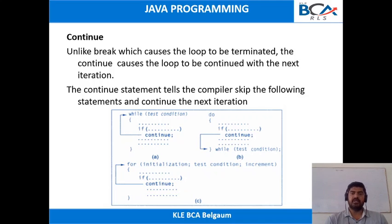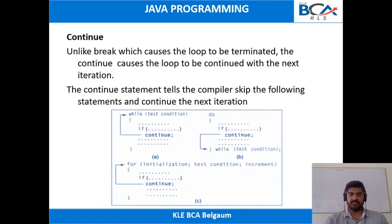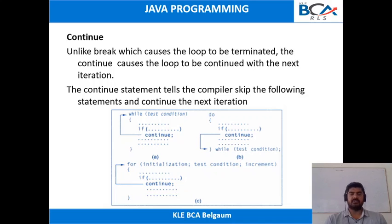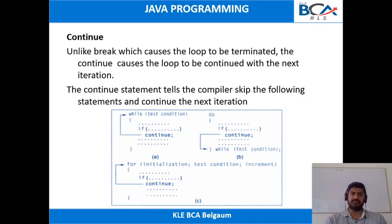Suppose that you have a for loop. Inside that for loop, you have a condition statement. Inside that if condition, you have a continue statement. Your for loop starts its execution, next the control will come to the if condition. If that condition is satisfied, after that condition we include the continue statement.